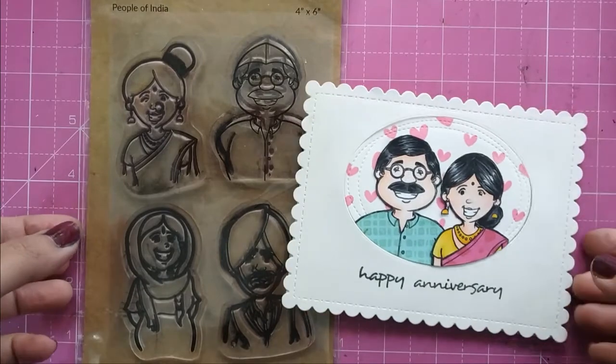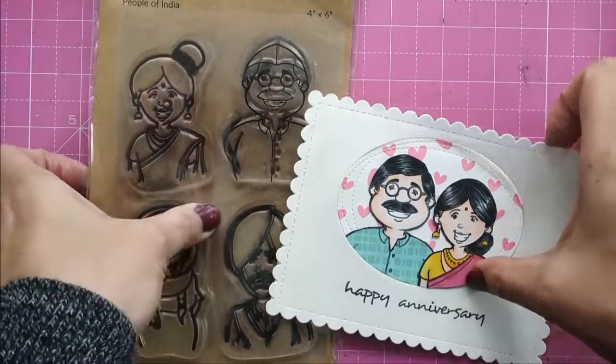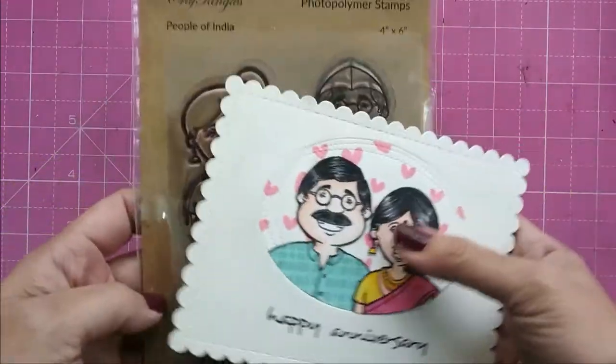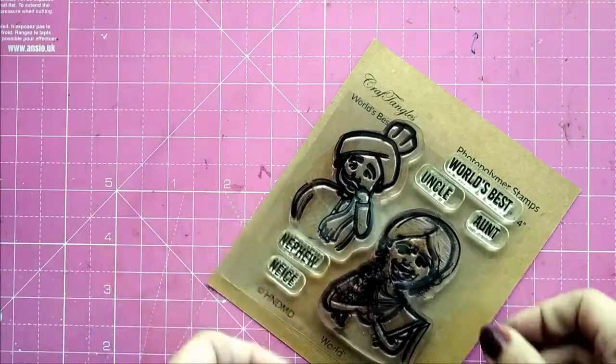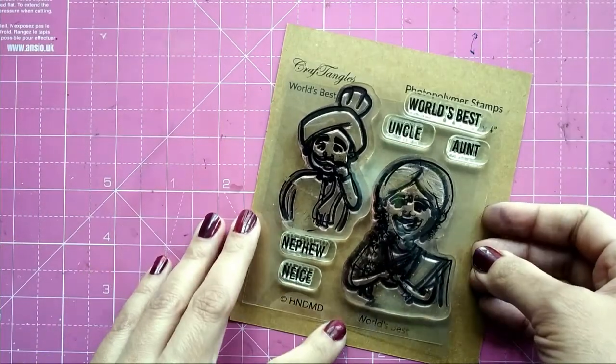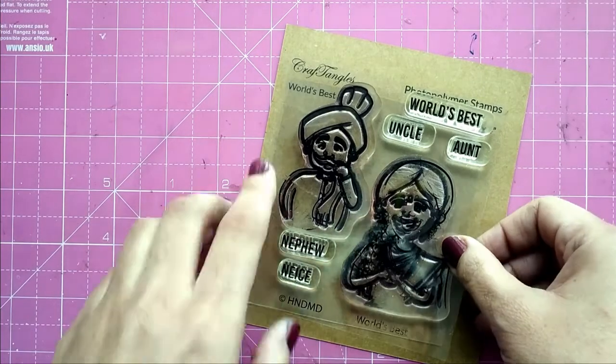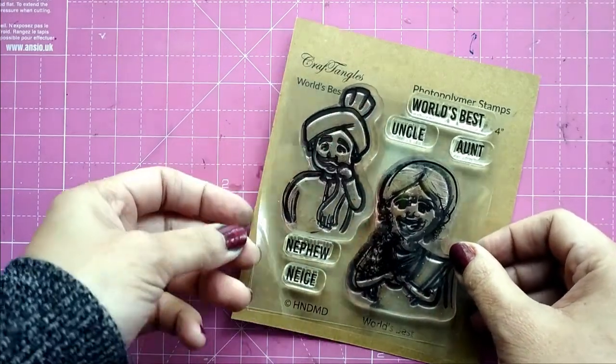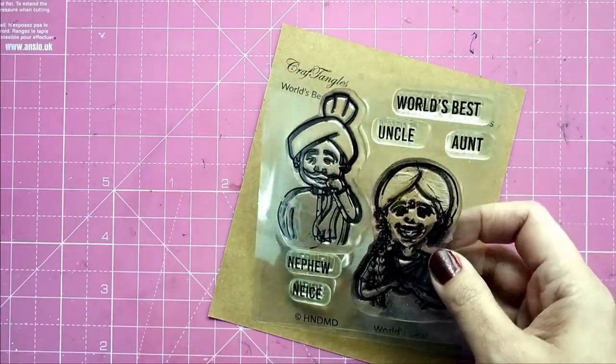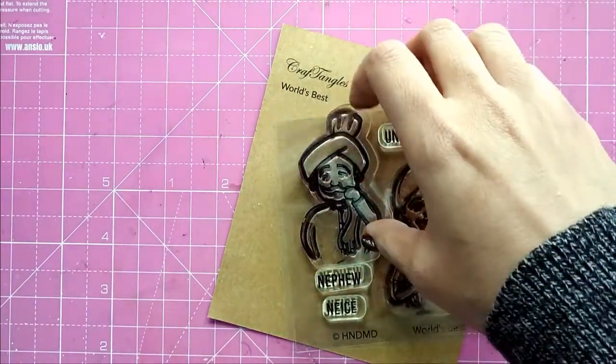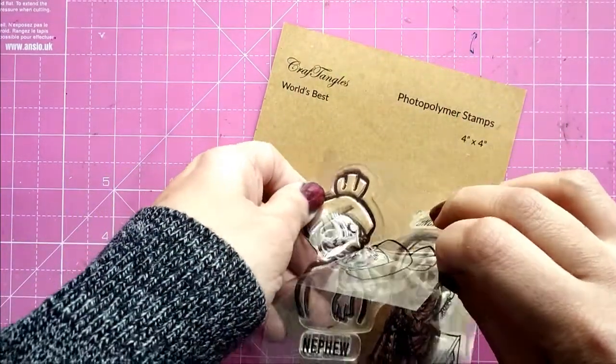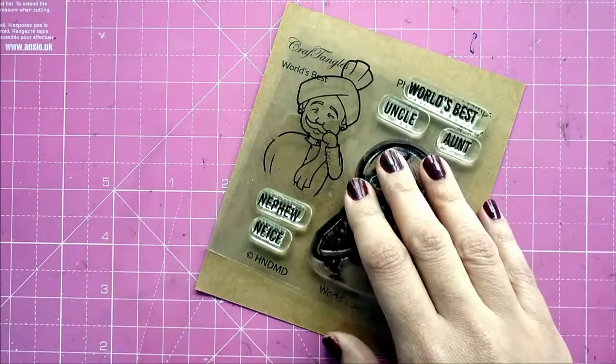I made this next-door neighbor couple for an anniversary card. I thought I could do some more selective masking for making a Santa Claus. I thought this man, whom I lovingly called Tauji because he looks like he could be my father's elder brother, would be perfect to dress up as Santa Claus.